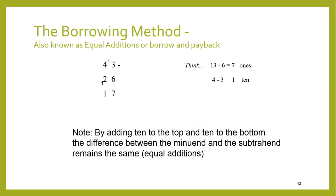The borrowing method — the way it used to be done in the 50s and 60s and even earlier — was to say: 6 from 3 we can't do, so we'll borrow a 10; 6 from 13 leaves 7, and the 10 we borrowed we'll have to pay back. So instead of taking 20 from 40, we've got to take 30 from 40. This gives us the same answer — 43 take away 26 is 17 — but it's harder to model with MABs, so it's not a preferred method at the current time. Not all teachers changed to the decomposition method, and this borrowing method was still taught even though the decomposition method was promoted.